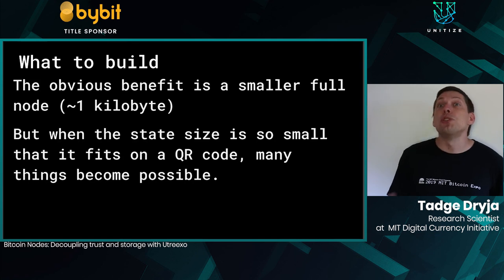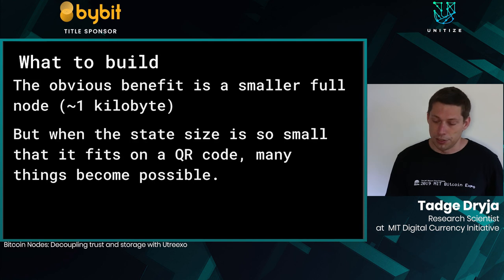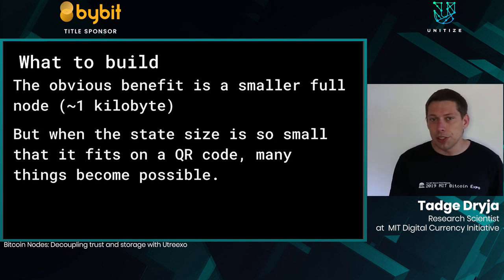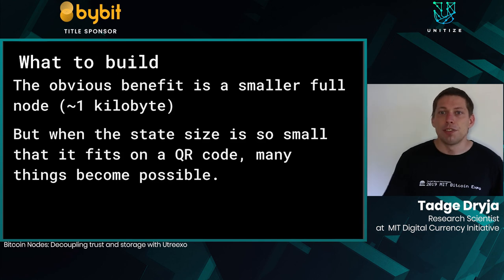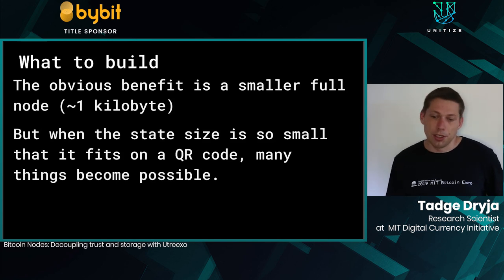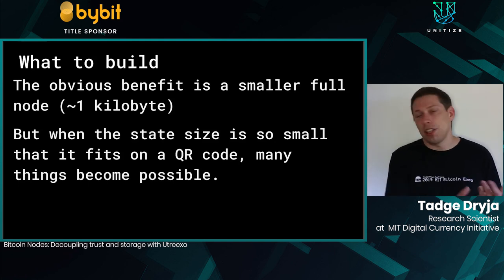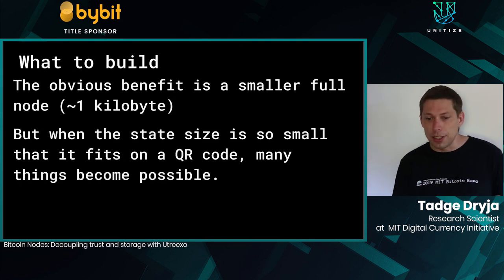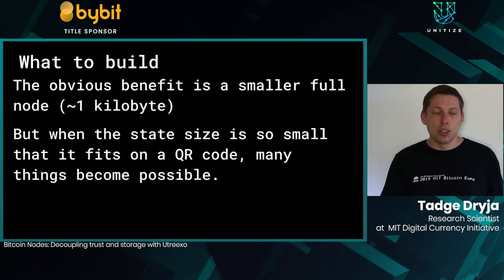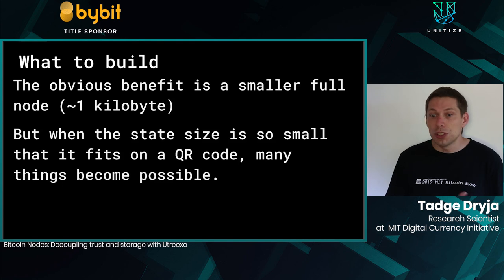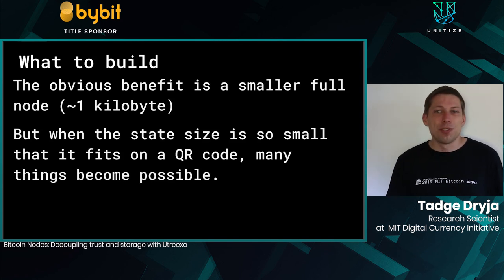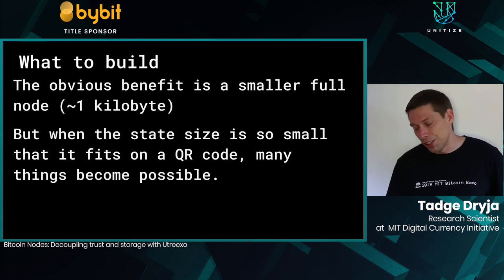The obvious benefit is your full node is now tiny — instead of large disk IO and lots of storage, it doesn't need much. When the state size is so small, it fits on a QR code. You can sync a full node on your desktop, then copy the entire state to your cell phone — instead of downloading hundreds of gigabytes over hours or days, it's just a QR code scan and your phone is synced.